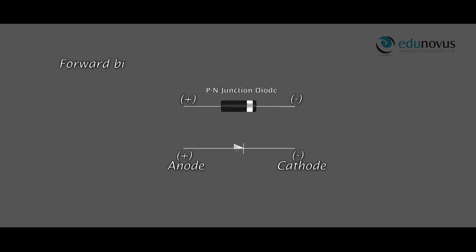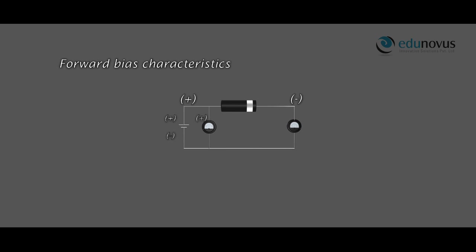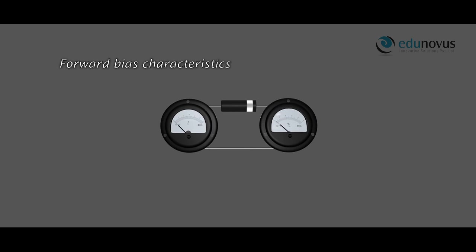Now let us study the forward bias characteristics. When the P section is connected to the positive terminal and the N section is connected to the negative terminal of the battery, the PN junction is said to be in forward bias. With the increase in forward bias voltage, the forward current increases slowly. When the forward bias voltage V equals the threshold voltage, the forward current increases rapidly.